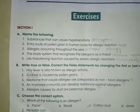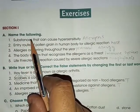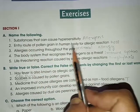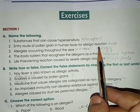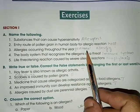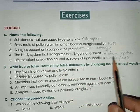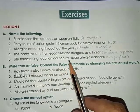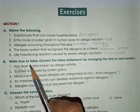Page number 118, Section 1. Question: Name the following. Substances that cause hypersensitivity — answer: allergens. Entry route of pollen grain in the human body for allergic reaction — answer: nose. Allergies occurring throughout the year — answer: perennial allergy. The body system that recognizes allergens as a threat — answer: immune system. Life-threatening reaction caused by severe allergic reactions — answer: anaphylaxis.